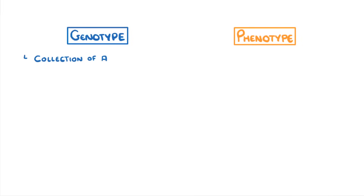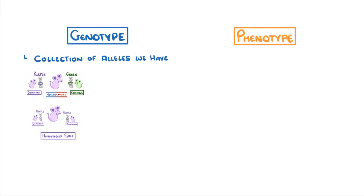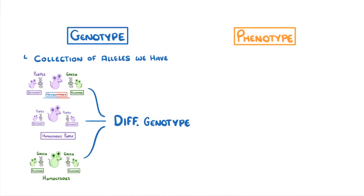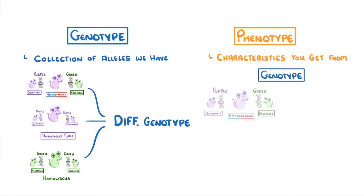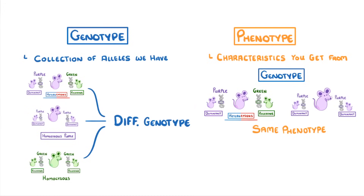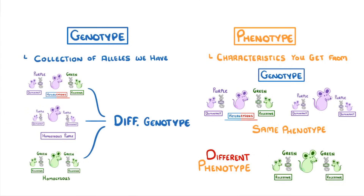The last two terms we need to cover are genotype and phenotype. The genotype is basically the entire collection of alleles that we have. So if we take the three mice we used before — the heterozygous mouse, the homozygous dominant, and the homozygous recessive one — we would say that they all have different genotypes, because they have different alleles and so different genetic codes. However, your phenotype is the characteristics that you get from your genotype. As both the heterozygous mouse and the homozygous dominant mouse are purple, we would say they have the same phenotype, even though they had different genotypes. Meanwhile, because our homozygous recessive mouse is green rather than purple, it has a different phenotype as well as a different genotype.